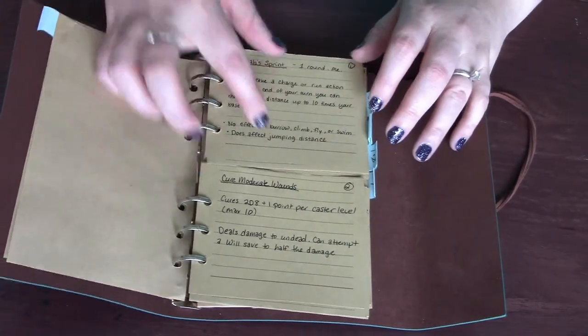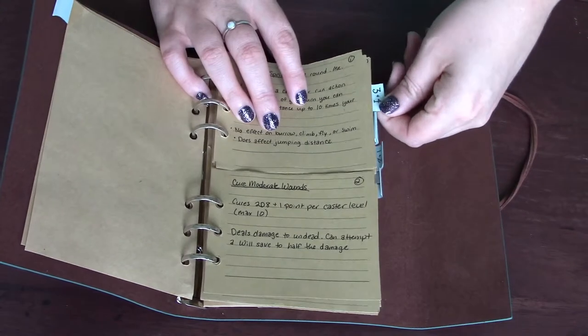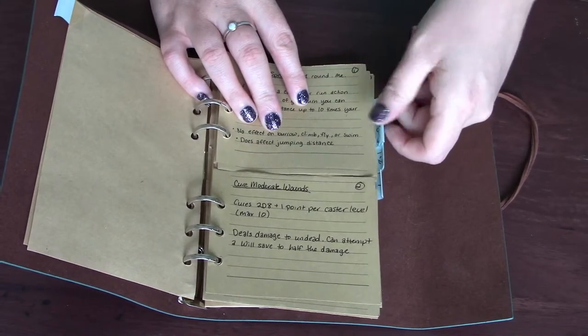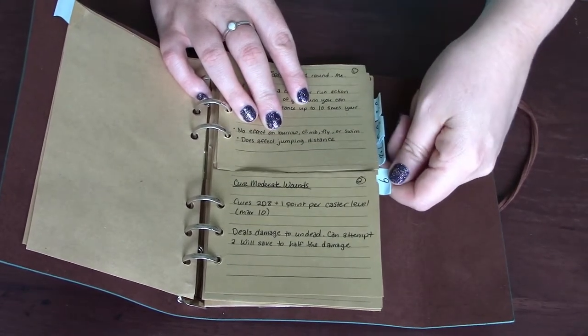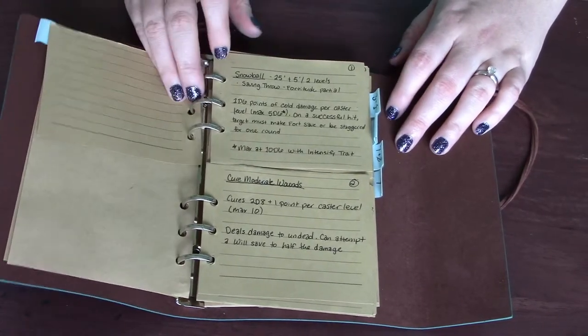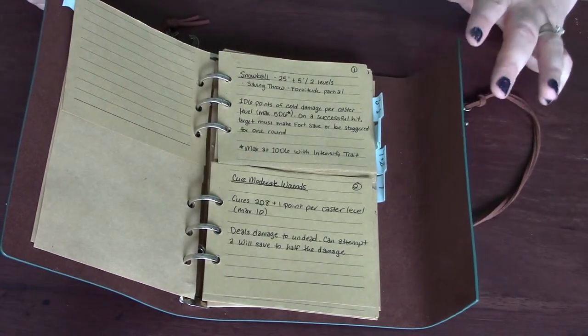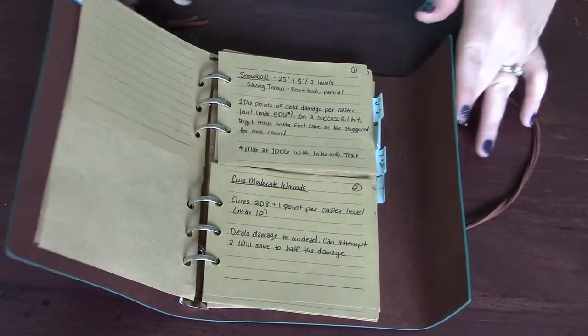So I have all of my first-level spells on the top, and then second, and then I made little bookmarks for third and fourth, fifth and sixth, all the way up to nine. And basically what I do is, if I prepare more than one, I just take a pencil and I mark off how many I have for the day. But there are some other options with that, which I'm going to talk about next.